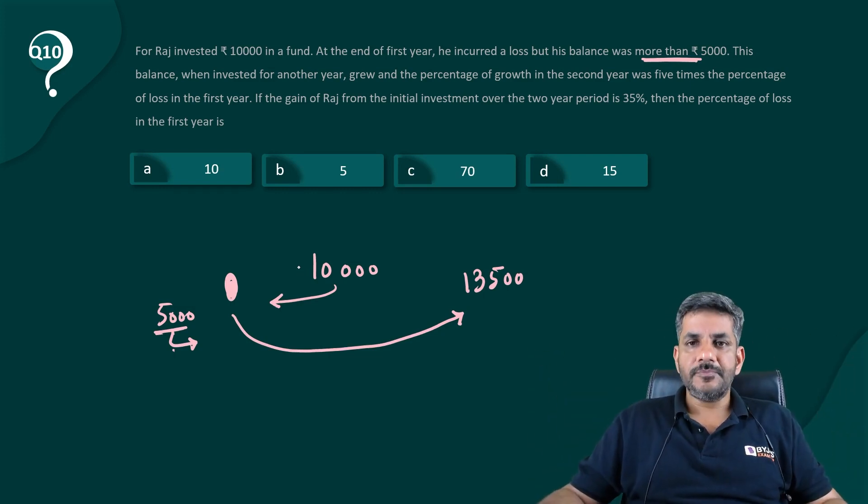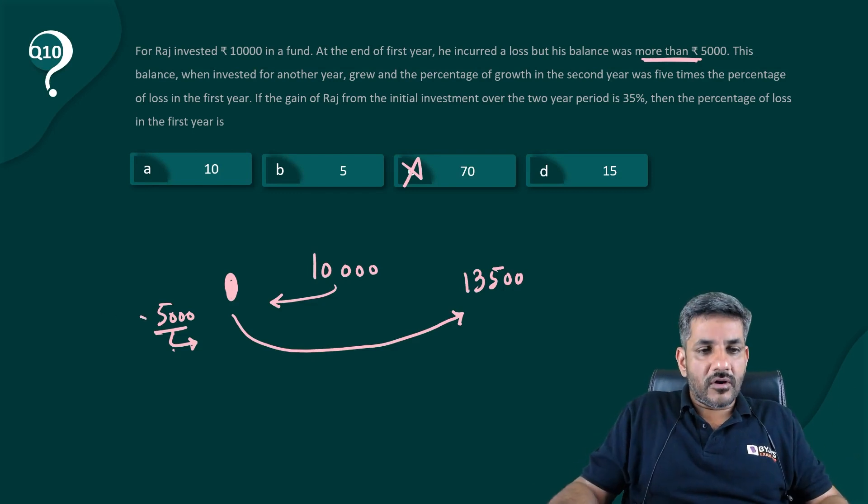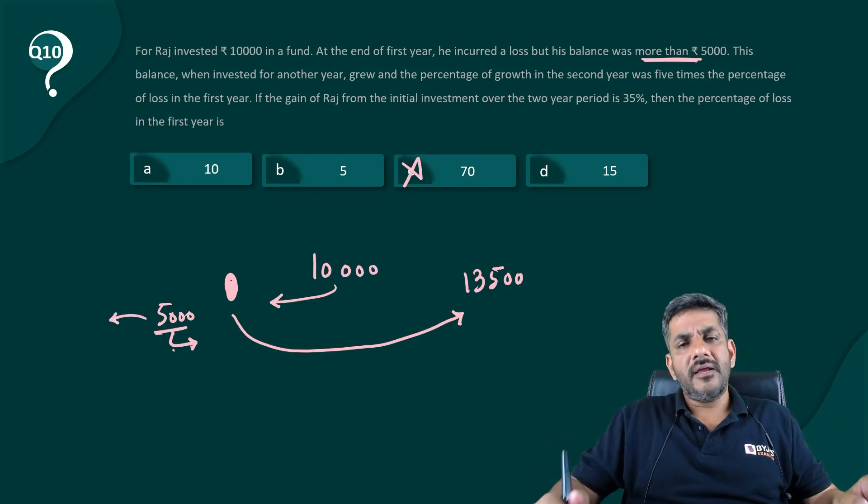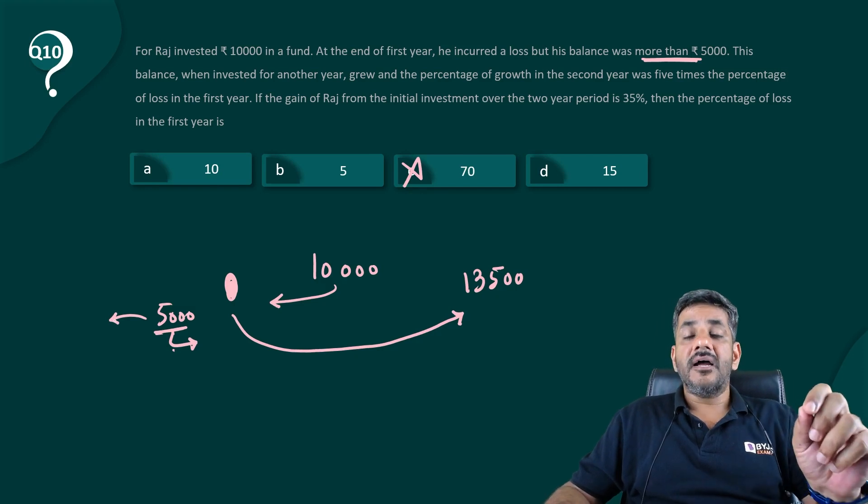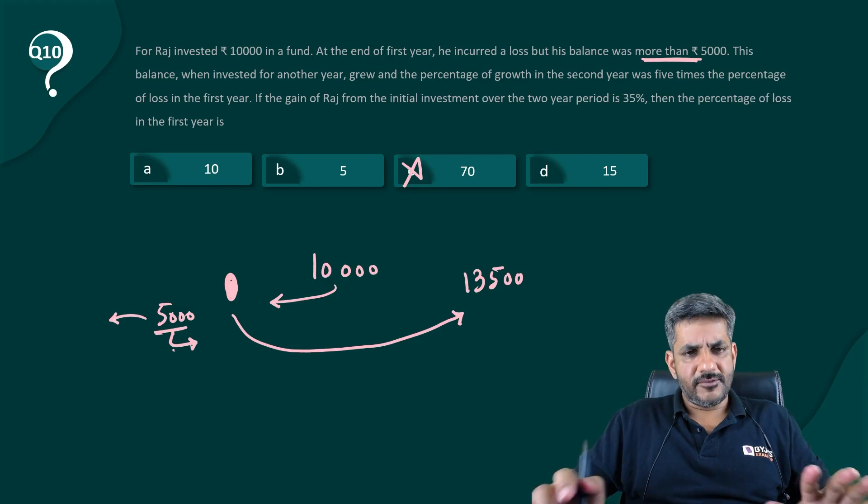What is the percentage loss in the first year? One thing is very clear, the answer cannot be 70, because if the first loss is 70, it would have gone below 5000. How can my answer be 70? Either my answer is 10, or my answer is 5, or my answer is 15.